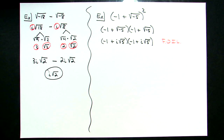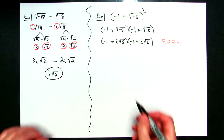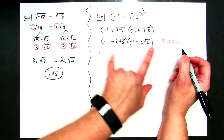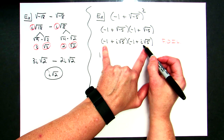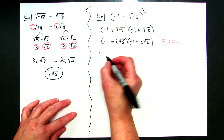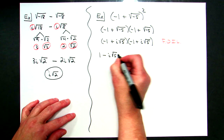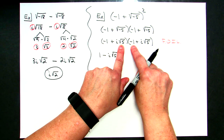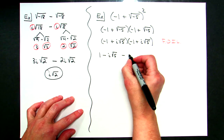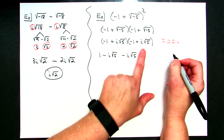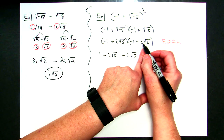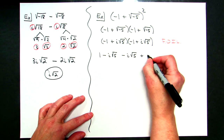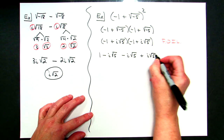Make sure to pull the negatives out of your radicals before you foil. First terms: negative 1 times negative 1 gives 1. Outside terms: negative 1 times i√5 gives -i√5. Inside terms: i√5 times negative 1 gives -i√5. For the last terms, I need to compute i√5 times i√5, which is (i√5) squared, and I'll show the steps for that.